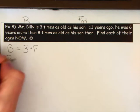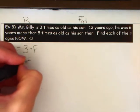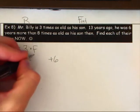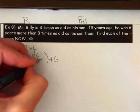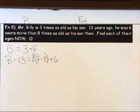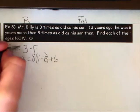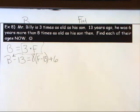Equation two: 13 years ago, Mr. Billy's age was b − 13. He was six more than eight times his son's age then, so: b − 13 = 8(f − 13) + 6. This sets up nicely for substitution.